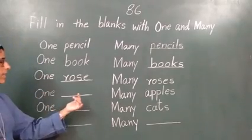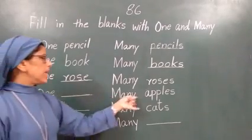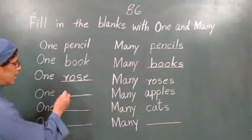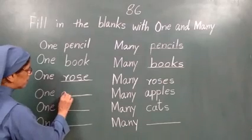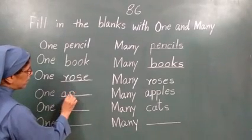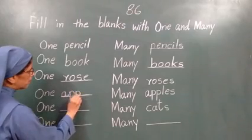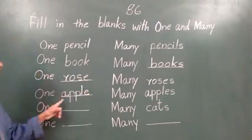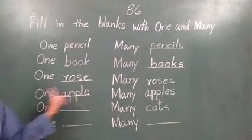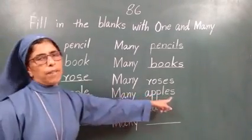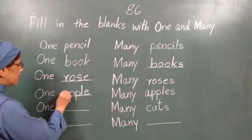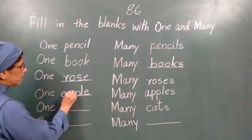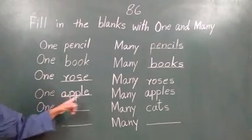Ab dekho — one, dash. Idhar kya riyangi? Many apples. Toh idhar kya riyangi? One apple. Very good. A, double P, L, E. Apple. One apple, many apples. Okay.